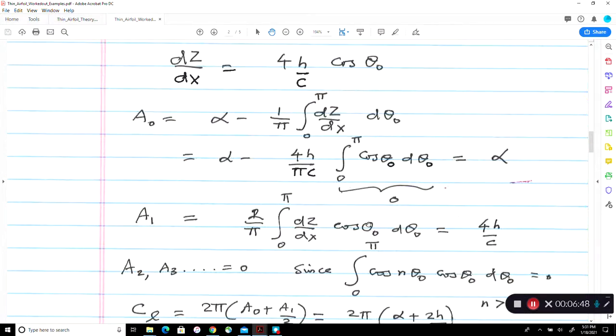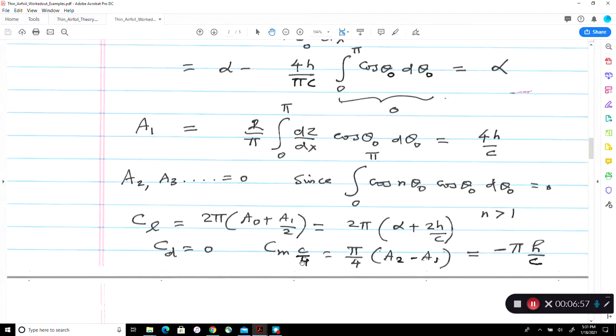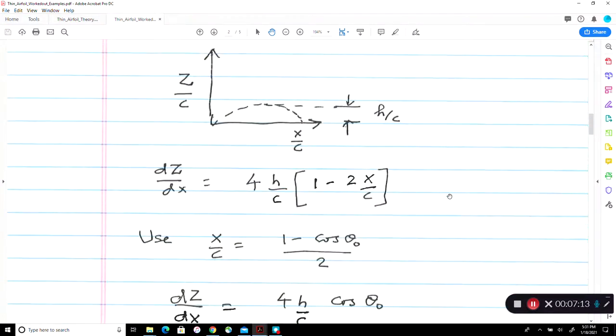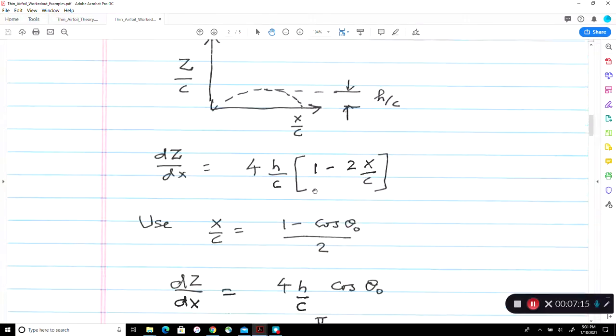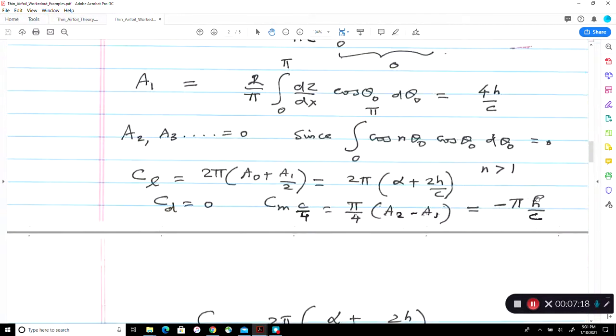Cosine 2 theta times cosine theta is 0. Cosine 3 theta times cosine theta is 0 and so forth. So a2, a3, etc. will all go to 0. Therefore, the cm c over 4 will be pi over 4, a2 minus a1. A2 is 0. A1 is 4h over c. Therefore, you get a negative number. So you get for a cambered aerofoil, which is cambered positive up like this, you get a nose down pitching moment. The more the camber, the more the nose down pitching moment.